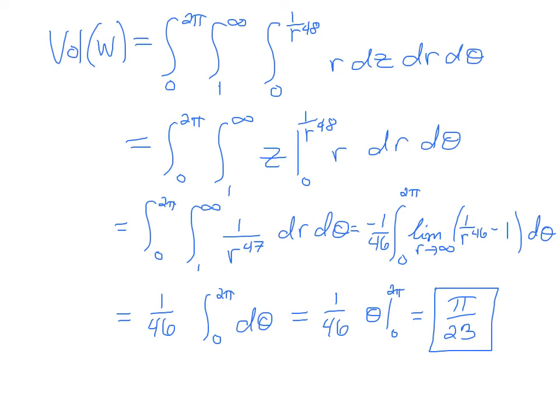If I add 1, that'll give me an r to the minus 46, or 1 over r to the 46th. And then I divide by the exponent, so that is 1 over minus 46. And then this is an improper integral, so I'm going to let r go to infinity. And my limits of integration were infinity and 1, so if I put a 1 in there, I get a 1 there. So I'll evaluate this limit.